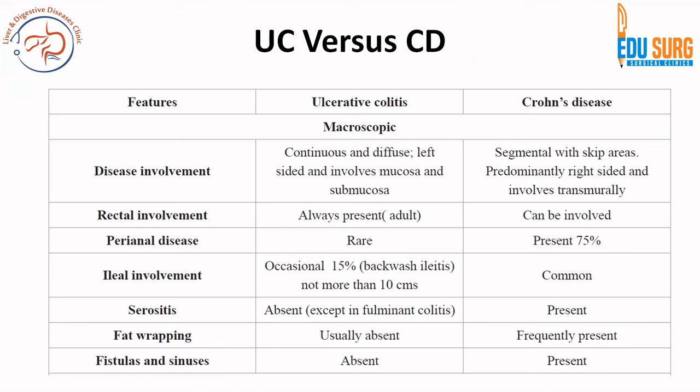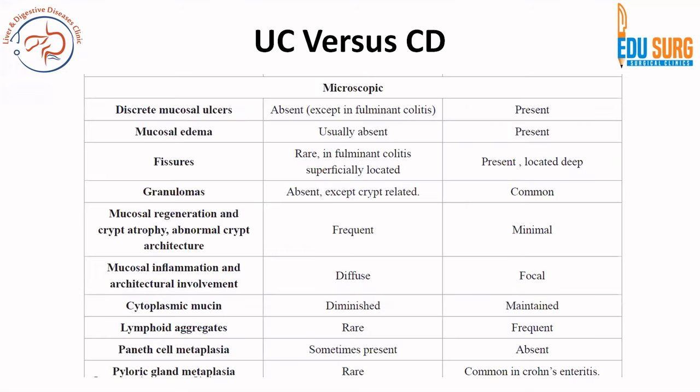Ulcerative colitis is continuous and diffuse. It involves the rectum in almost all cases. 15% of cases have backwash ileitis and perianal disease is rare in ulcerative colitis. Ulcerative colitis is continuous superficial disease, whereas Crohn's disease is segmental with transmural involvement. Fat trapping, fistulas, and sinuses are not common in ulcerative colitis but are common in Crohn's disease.